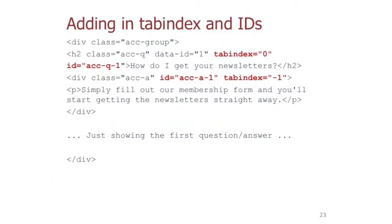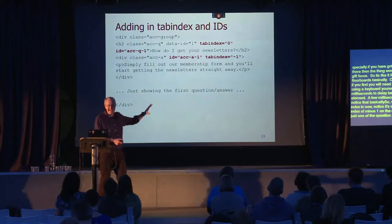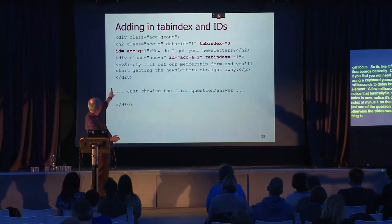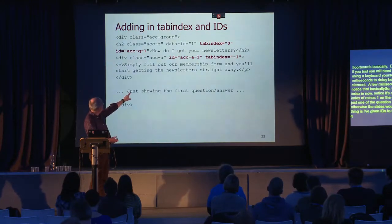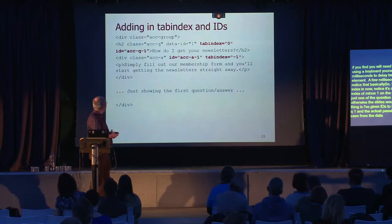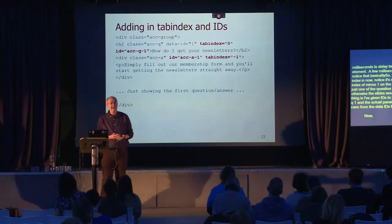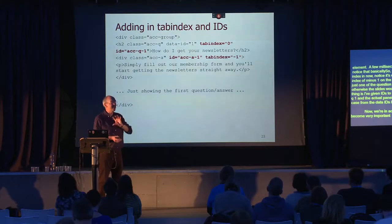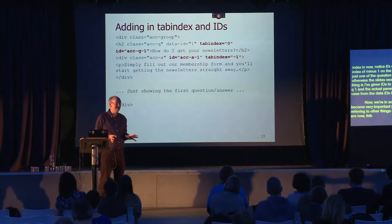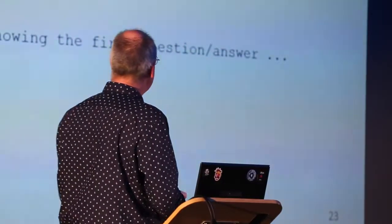So we add our tabindex values — tabindex='0' on the heading and tabindex='-1' on the div. I've also given IDs to the header (e.g., 'acq1') and the panel ('aca1'), driven from the data-IDs I put in the HTML. With ARIA, IDs become very important because you'll often need to reference other elements on the page. IDs must be unique within a page — that's a hard requirement.